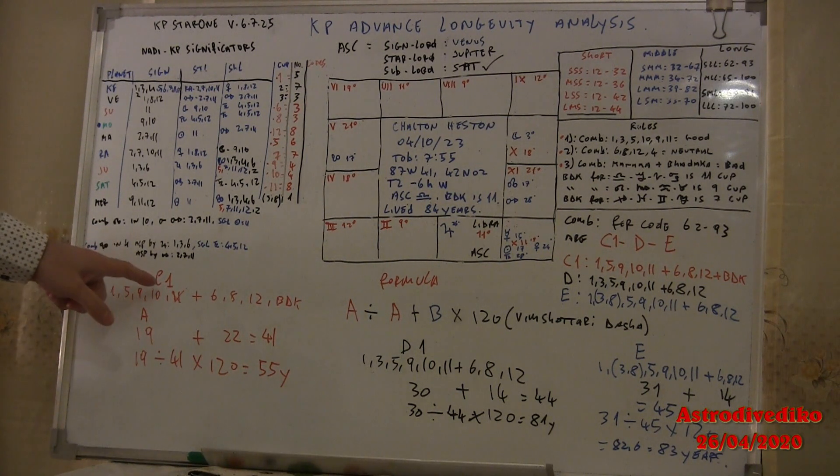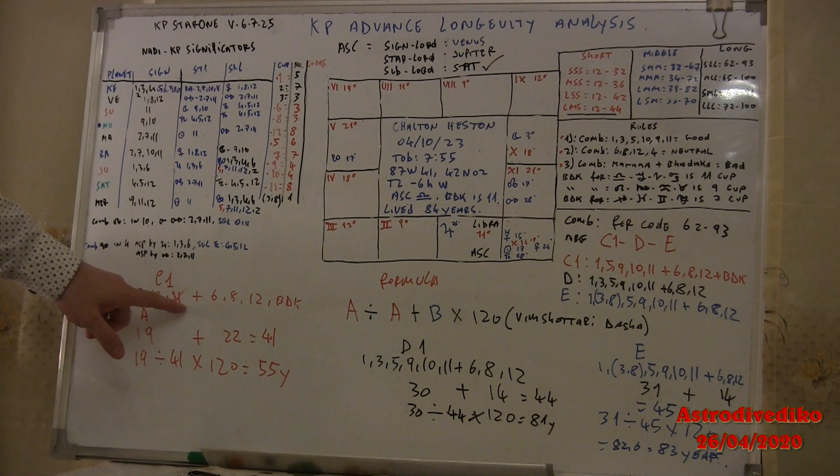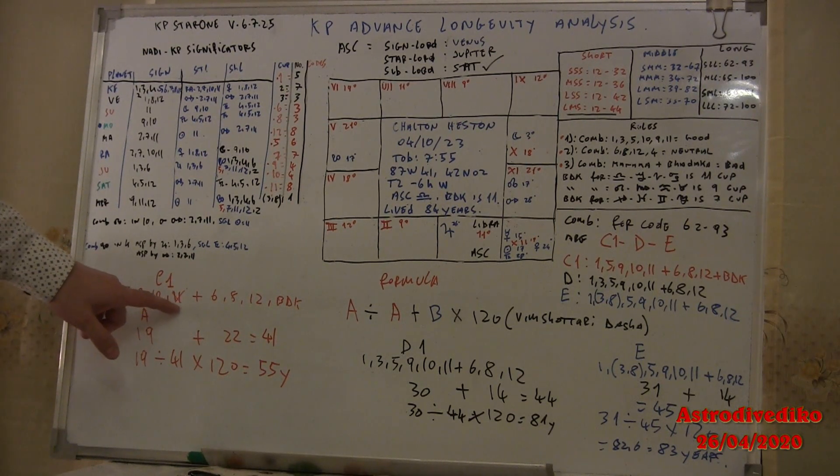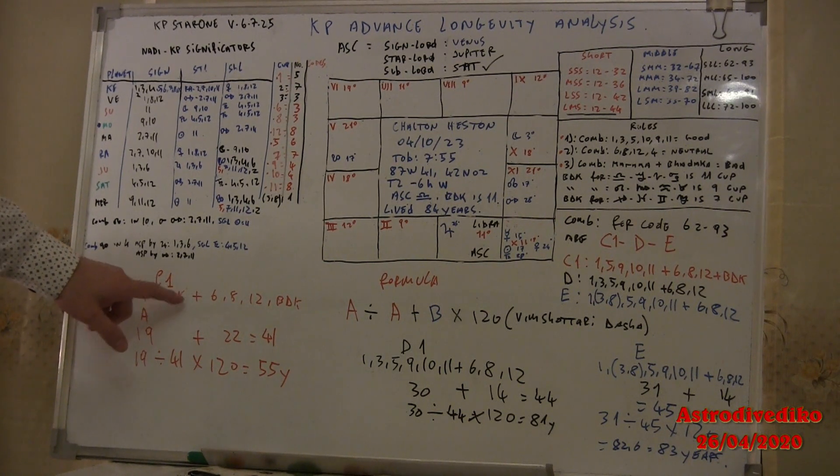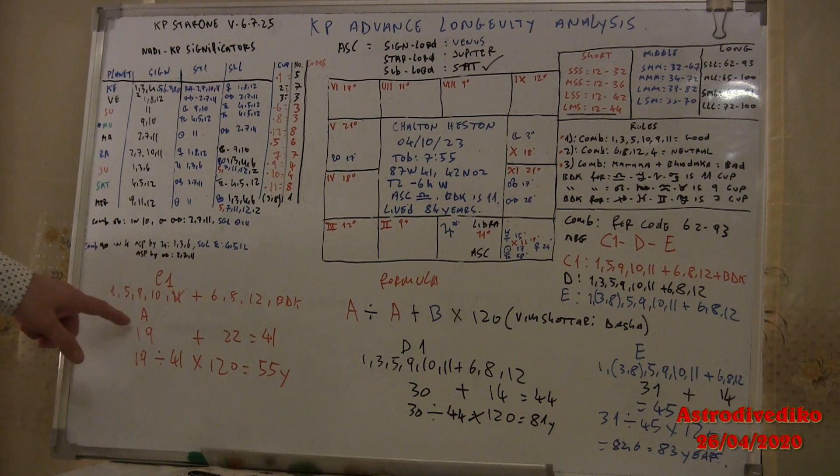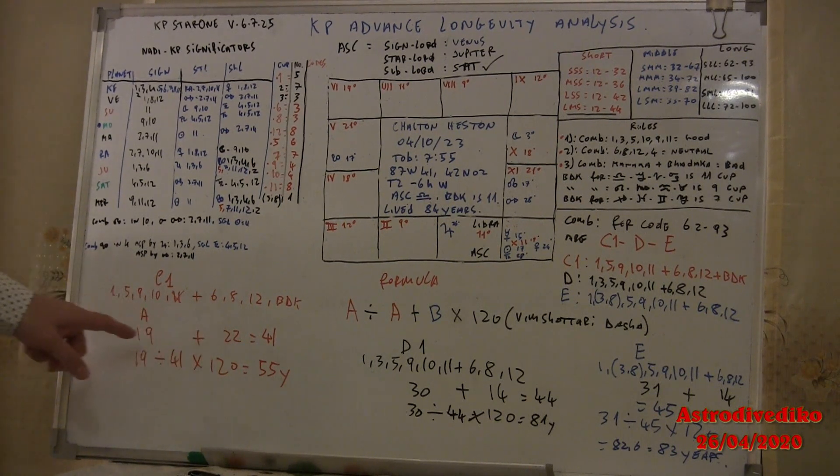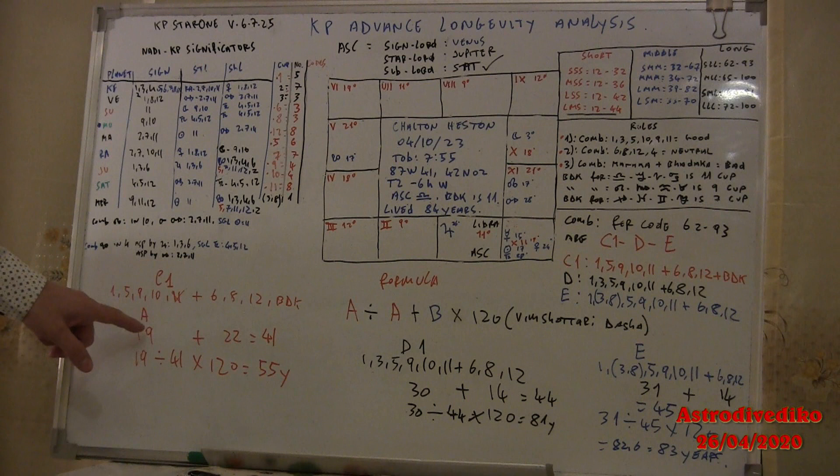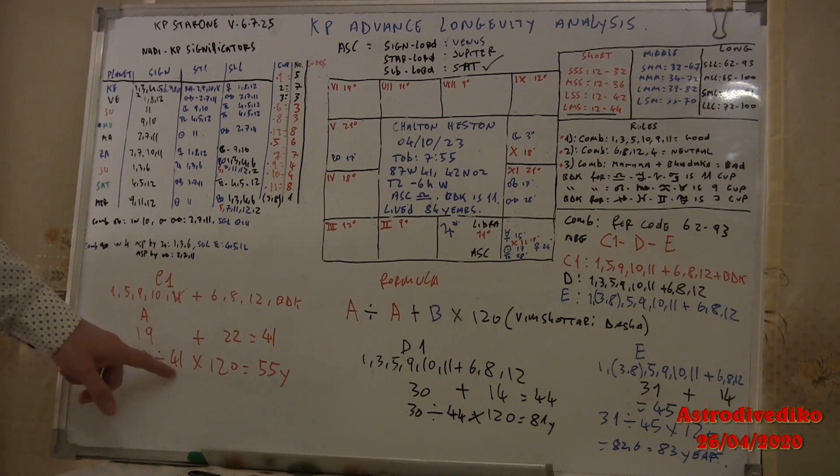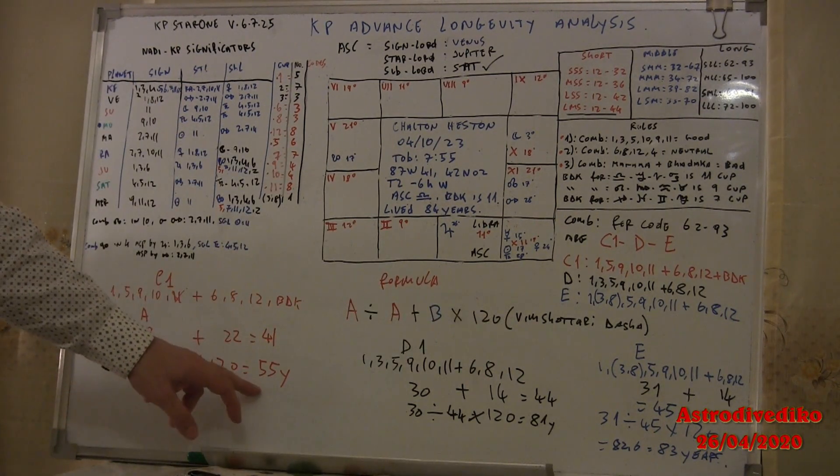Now as I said, the first block was from 62 to 93. These combinations C1, D, and E is to find the second block to reduce this first block. Now combination C1: it is 1, 5, 9, 10, 11. As I said, in the combination C or C1, you don't count the Badaga, plus 6, 8, 12 plus Badaga. Now the good combination is 19, the bad combination total is 22. Then what you do: 19 plus 22 is 41.